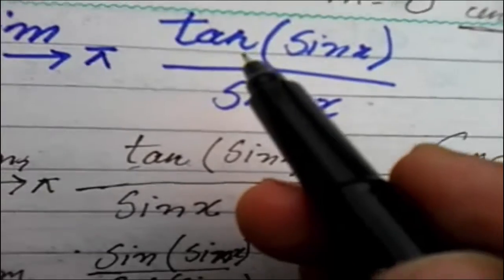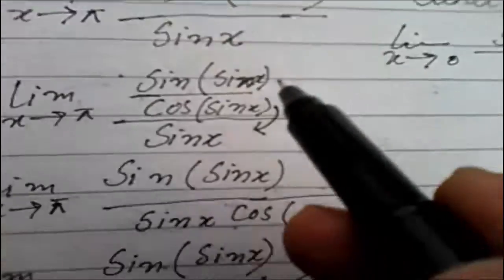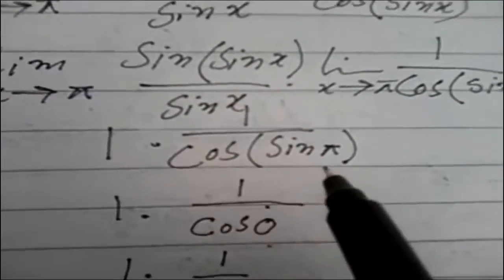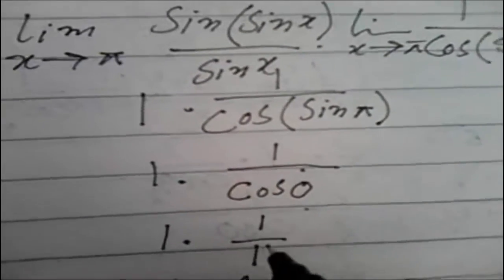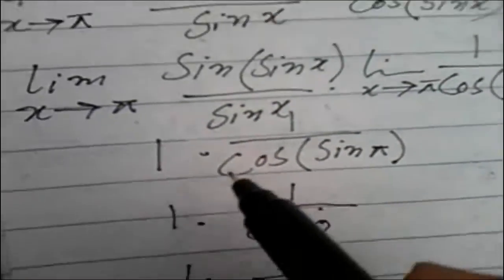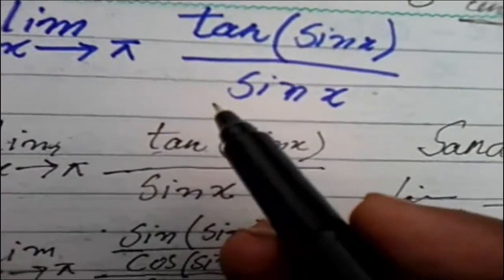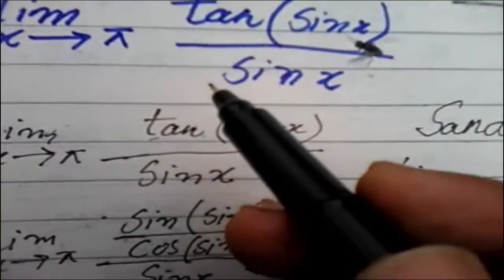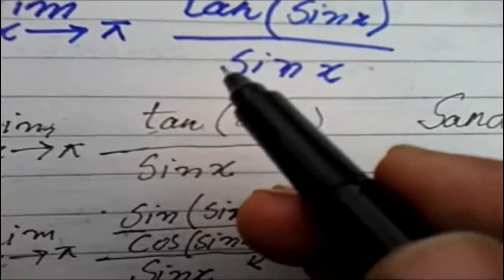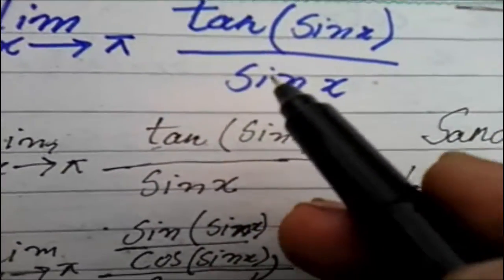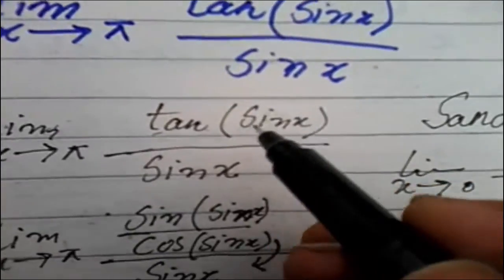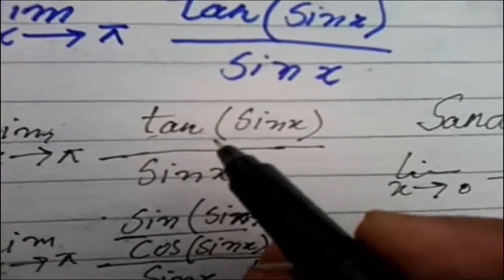So remember this: when you're calculating limit of any function, you must have to think how we can solve it. You must have to solve this and then put value of limit, then you got a different answer. Okay, but some limits do not exist, and rules are not applicable on them. So you have to use mathematical rules to calculate your answer.